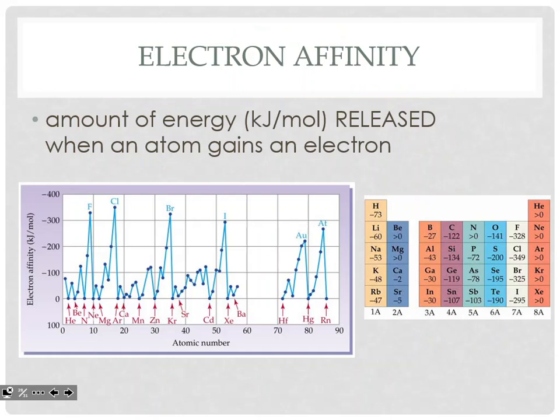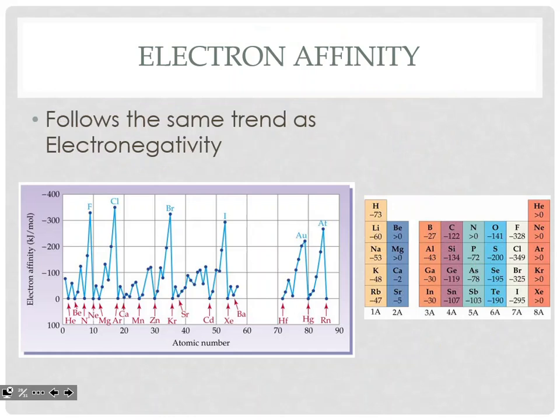Electron affinity is the amount of energy released when an atom gains an electron — so this applies to the anion-forming elements on the right. It follows the same trend as electronegativity — it's up and to the right, it increases. Noble gases aren't a part of electron affinity either because they're not seeking to gain electrons, so they're not going to want to release energy. Their electron affinities are actually above zero — you would have to force energy on them for them to take an electron.